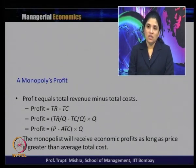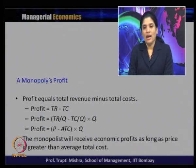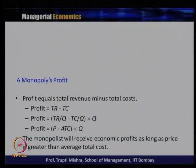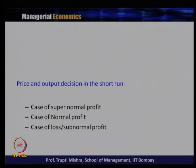If price equals average total cost, the firm earns normal profit. If price is below average total cost, the firm incurs a loss. We will now examine three cases in the short run: super normal profit, normal profit, and loss.